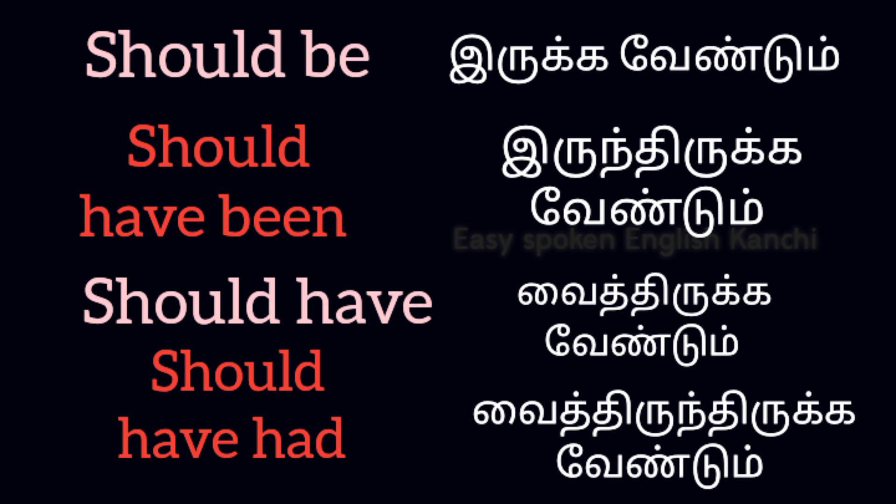So the four structures are: 'should be' (present form), 'should have been' (past form of should be), 'should have' (present form), and 'should have had' (past form of should have). Now we will look at examples.